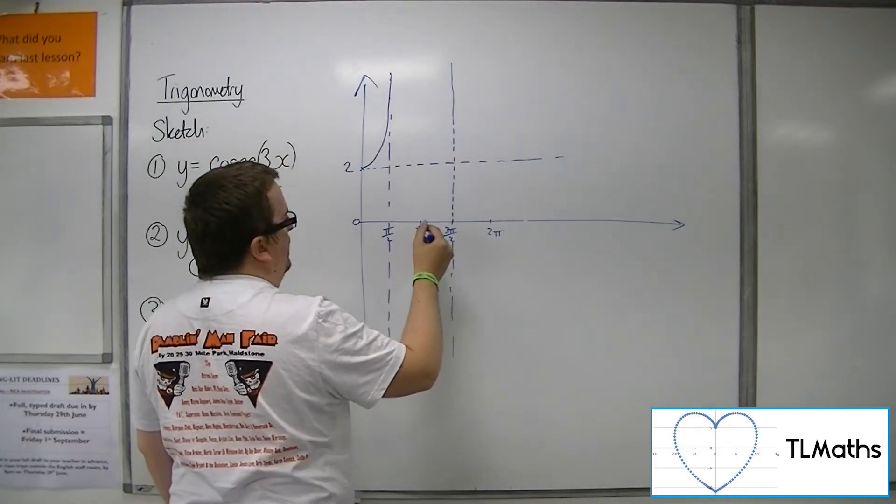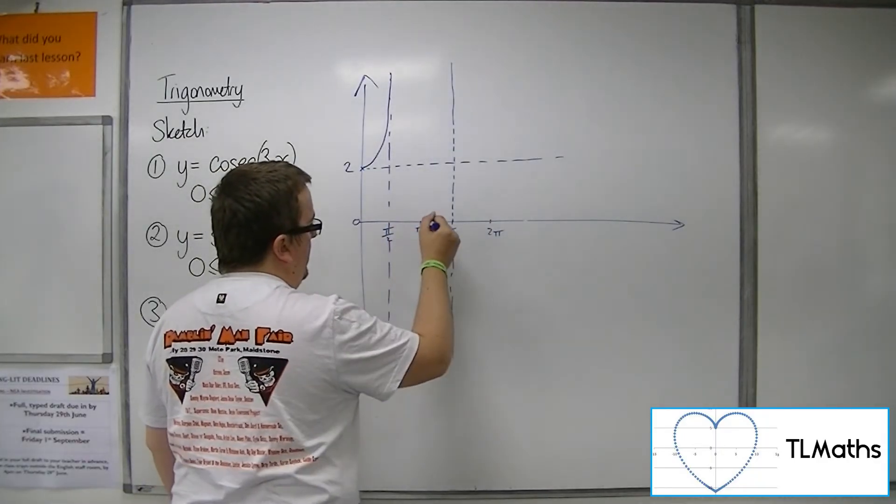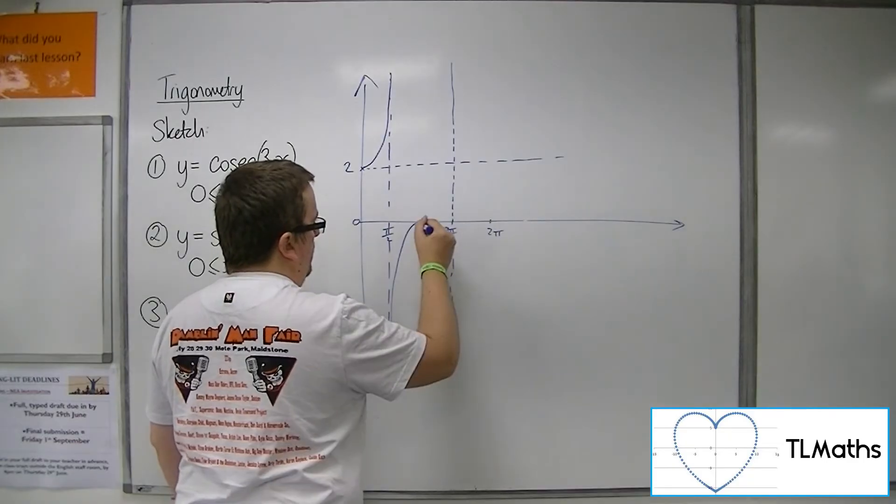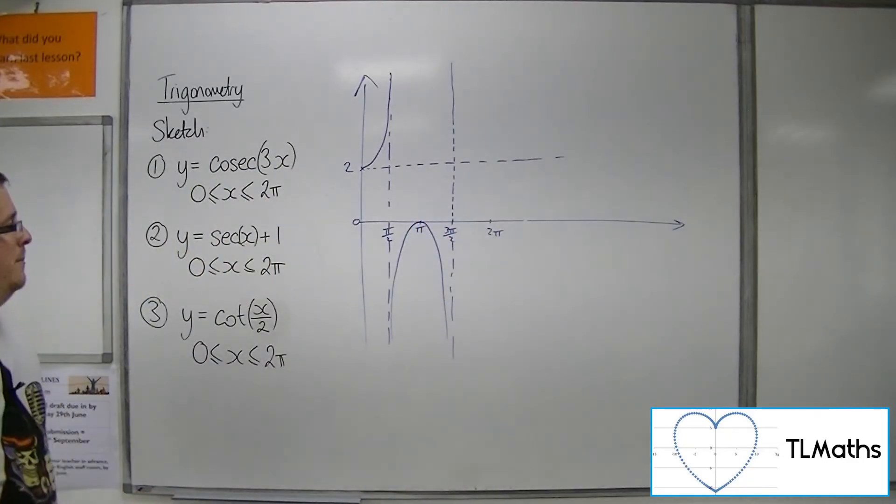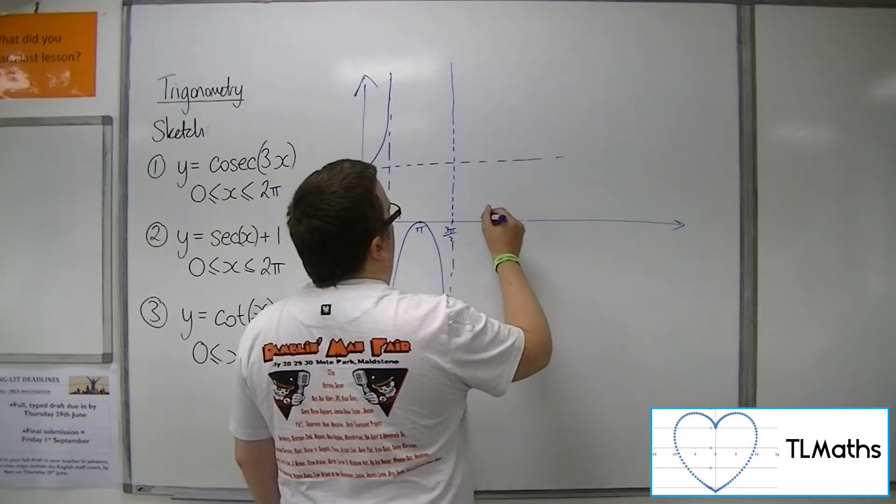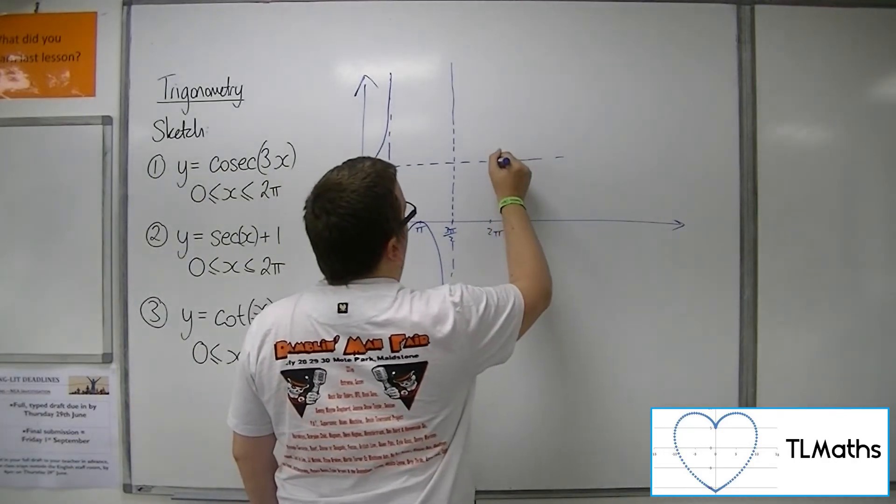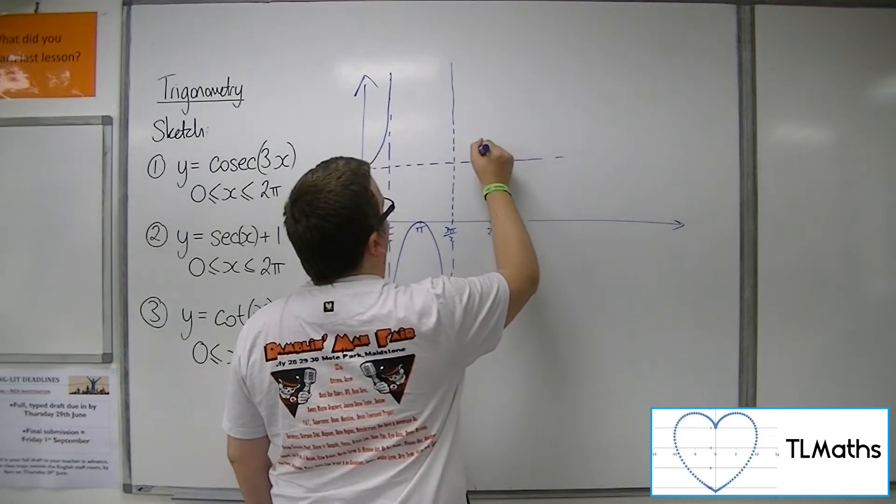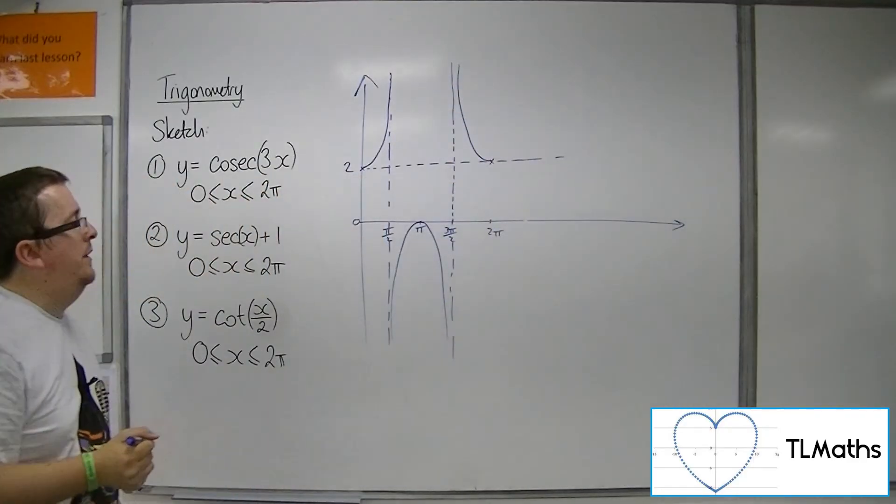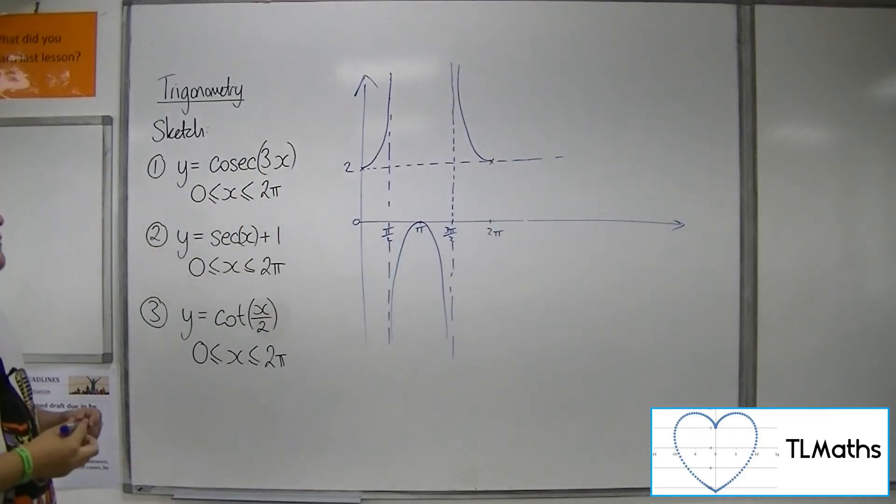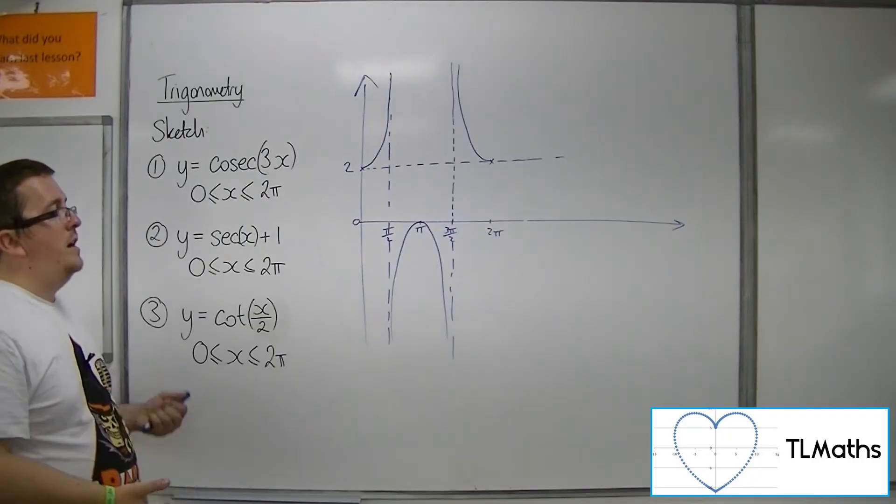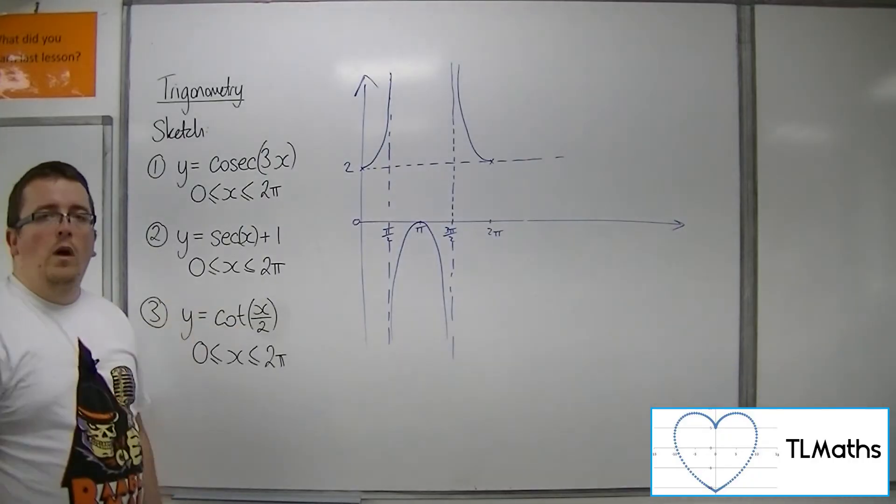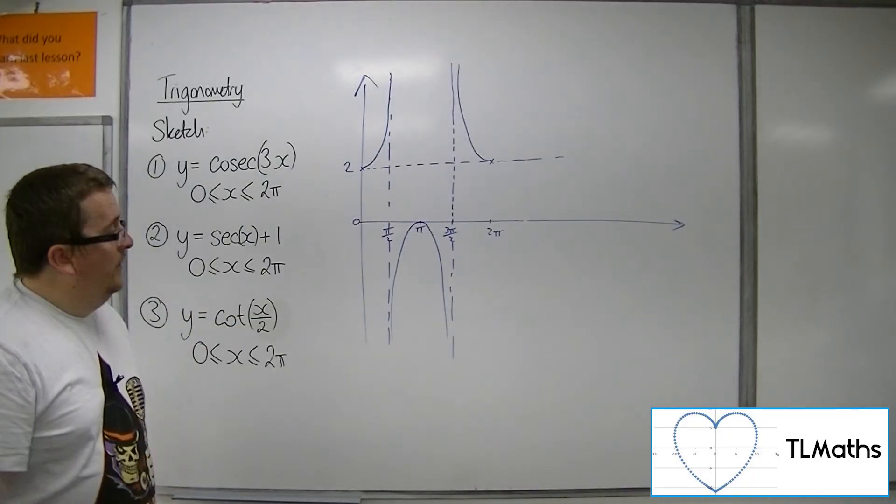And then the curve would ordinarily come down here. So that's where sec must now be. And then here, we've got this point at 2 pi. And so there's the curve between 0 and 2 pi, translated 1 up. So that's number 2.